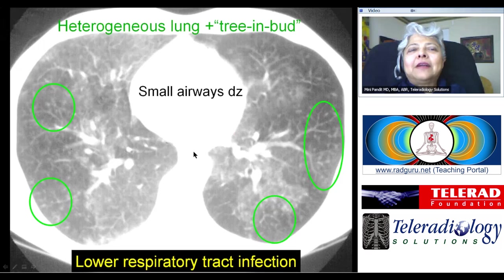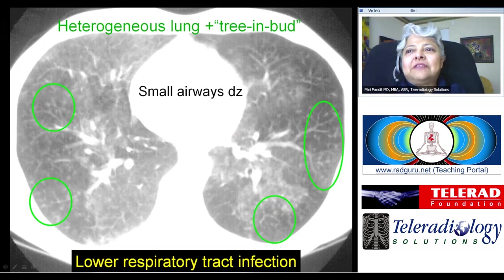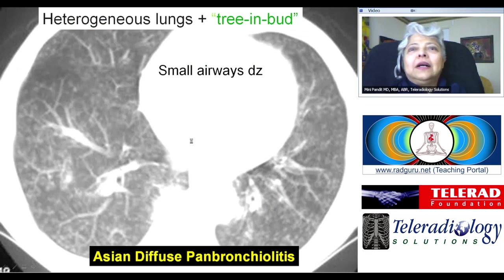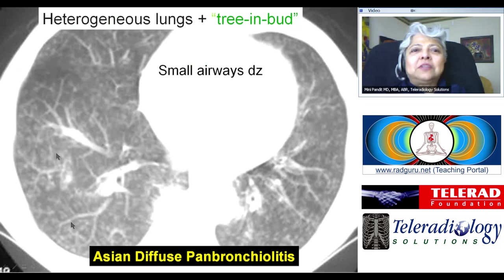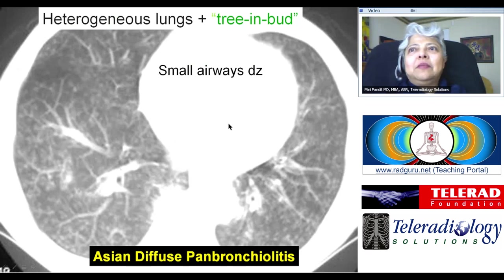Another example — actually the same case with a different area lower down in the lungs — showing again tree-in-bud appearance circled in green. This patient has extensive tree-in-bud appearance, some degree of heterogeneity with hyperlucent areas and less lucent areas elsewhere, but tree-in-bud is the predominant appearance. This is Asian diffuse pan-bronchiolitis, known to be caused by virus as well.